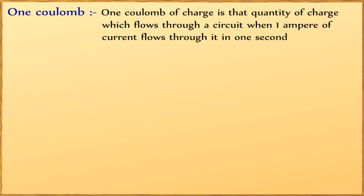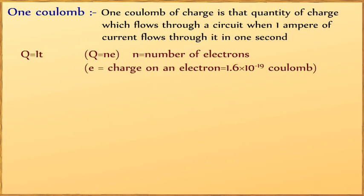One coulomb of charge is that quantity of charge which flows through a circuit when 1 ampere of current flows through it in 1 second. Q equals It. Q equals Ne, where N is the number of electrons and e is charge on an electron, which is 1.6 × 10^-19 coulomb.